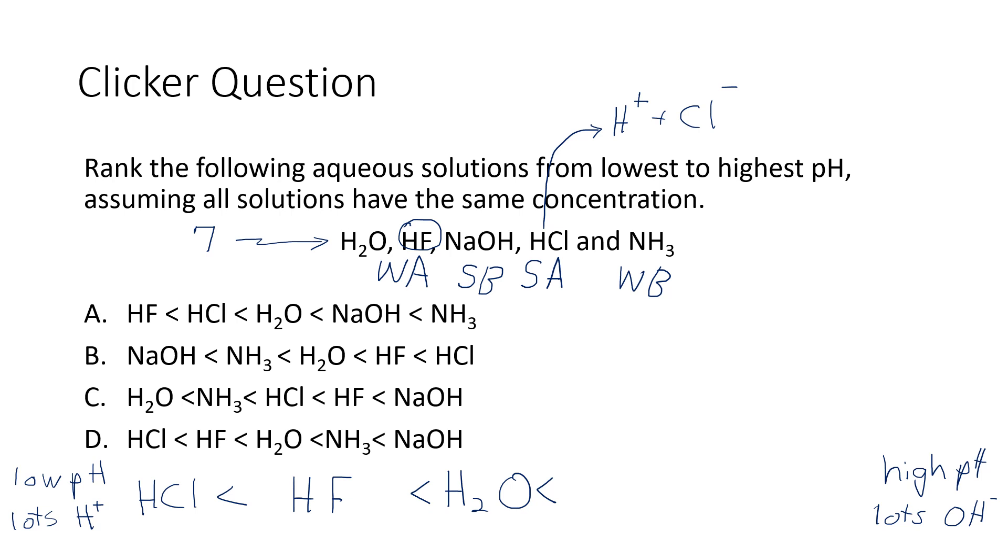Let's think about this for a moment. Strong bases prefer to ionize completely, so when you put NaOH in water you no longer have NaOH. Instead you have sodium ions and hydroxide ions, so we get the maximum possible amount of hydroxide ions out of this one. I'm just going to go ahead and put that at the top of our list. NaOH is going to have the highest pH.